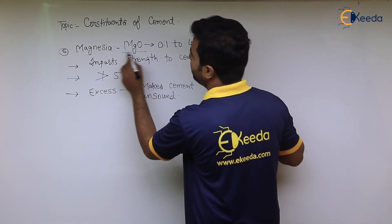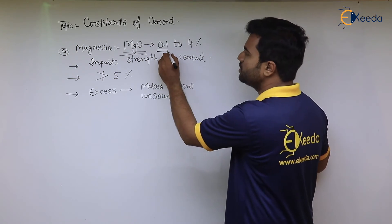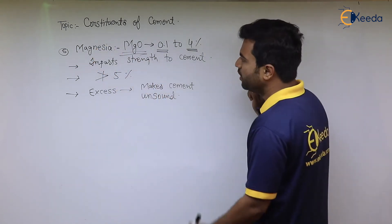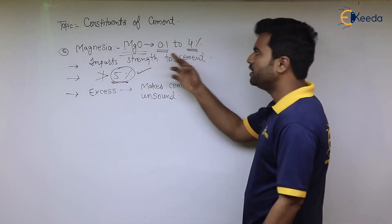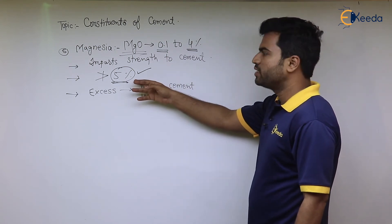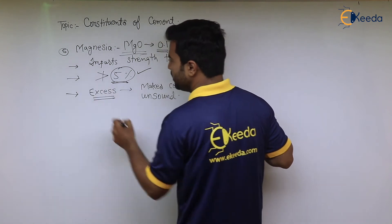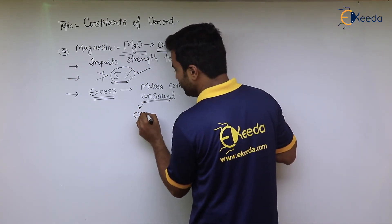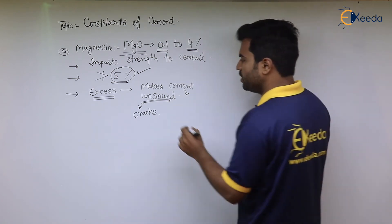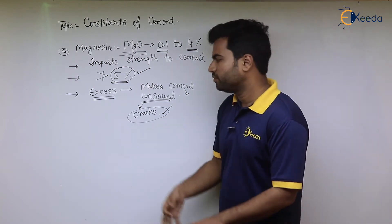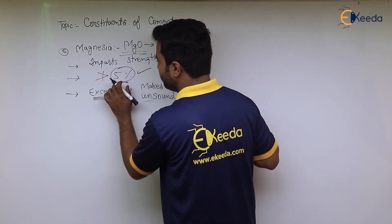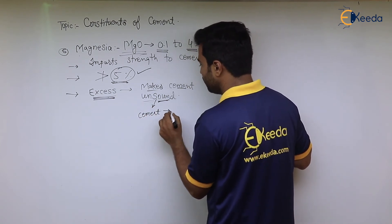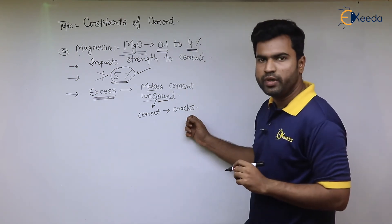The next constituent is magnesia; its chemical formula is MgO and its percentage is 0.1 to 4 percent. Its function is that it gives strength to the cement. Care should be taken that it does not exceed 5 percent. If excess magnesia is provided, it makes the cement unsound — meaning it causes expansion and cracking in the cement.